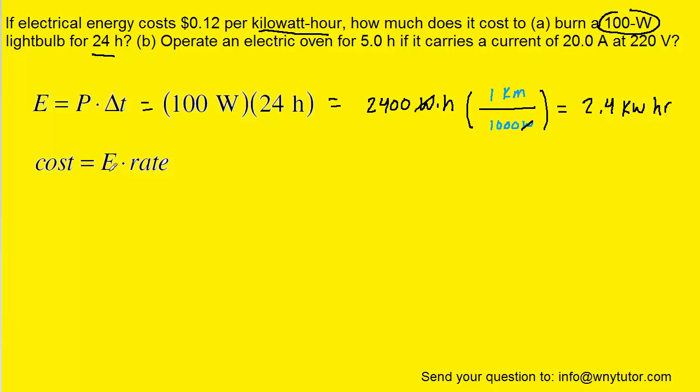Moving on to the total cost, all we have to do is multiply this amount of energy by the rate of cost of that energy. That rate was given to us in the question as 12 cents per kilowatt-hour. We'll plug in that rate and the energy that we just found. When we calculate this we get a value of approximately 29 cents or 0.29 dollars. So this would be the correct answer to part A.